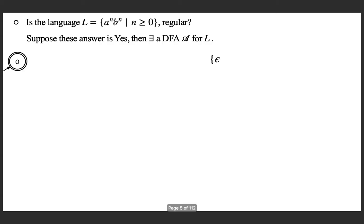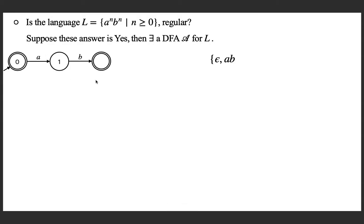The first string is epsilon, so you can have a DFA state for accepting epsilon. The next string is AB, and you can extend it like this. I am not showing the other transitions, which are all defined to a non-final state from where there is a self-loop for A and B. Assume that such a state is there; for simplicity I am not showing it.